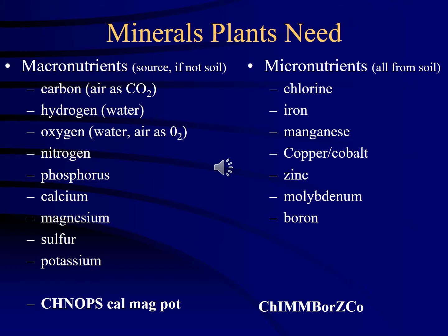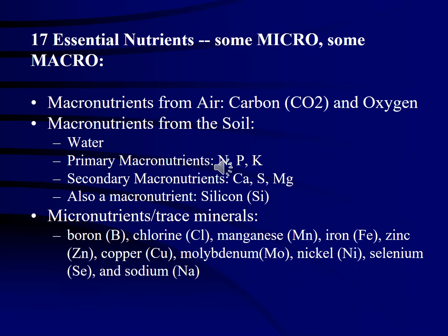The other nutrients are the ones we do focus on when giving fertilizers to plants. Another way to categorize minerals, besides macro and micro, is: primary macronutrients are nitrogen, phosphorus, and potassium — NPK — and the secondary macronutrients are calcium, sulfur, and magnesium. Sometimes silicon is also listed as a macronutrient.